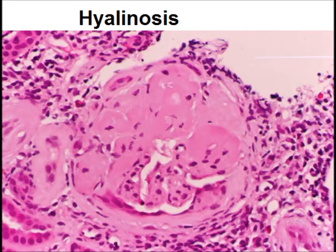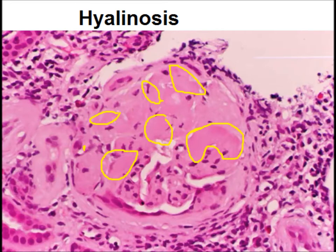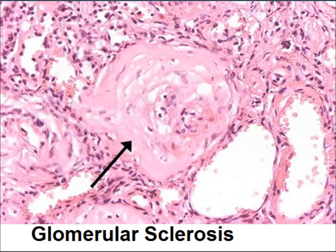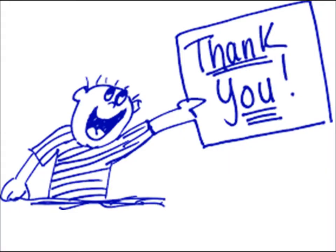There is another term: hyalinosis, which means there is deposition of acellular pink material on light microscopy. This may be due to proteinaceous material. Then there is another term: sclerosis. Glomerular sclerosis occurs due to collagen deposition, so there are almost no capillary tufts remaining in the center of the glomerulus. This is called a sclerosed glomerulus. I think you can now better understand the different morphological features of the glomerulus on light microscopy.